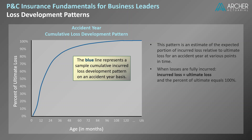Let's start at the very beginning of the accident year when the age in months equals zero. At this point in time, no losses have been incurred, so the expected percent of ultimate loss equals zero. As time progresses, additional incurred loss is expected to emerge. In this example, incurred loss is expected to equal 42.2% of ultimate after 12 months. As time increases to 24 months, the incurred percent of ultimate increases to 69.2%. At 36 months, it's equal to 81.8%, and this amount increases until it reaches its ultimate value of 100%.